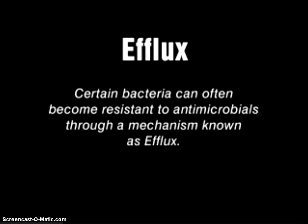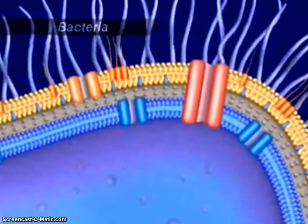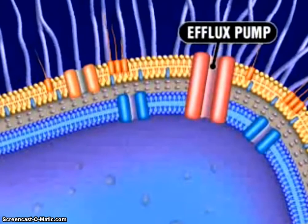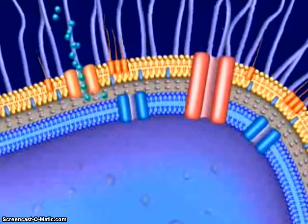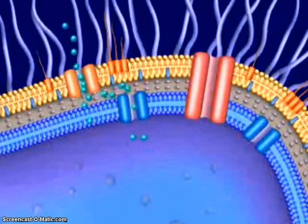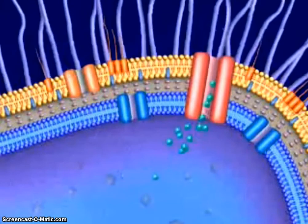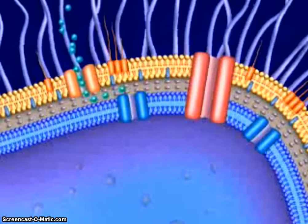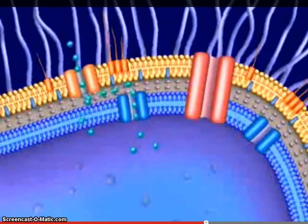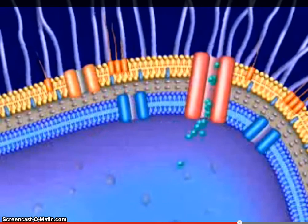Certain bacteria can often become resistant to antimicrobials through a mechanism known as efflux. An efflux pump is essentially a channel that actively exports antimicrobial and other compounds out of the cell. The antimicrobial enters the bacterium through a channel termed a porin, and then is pumped back out by the efflux pump. By actively pumping out antimicrobials, the efflux pumps prevent the intracellular accumulation necessary to exert their lethal activity inside the cell.